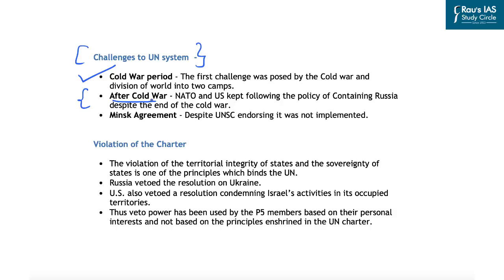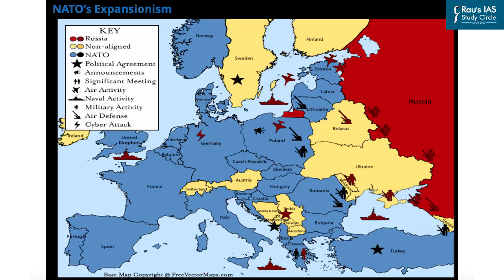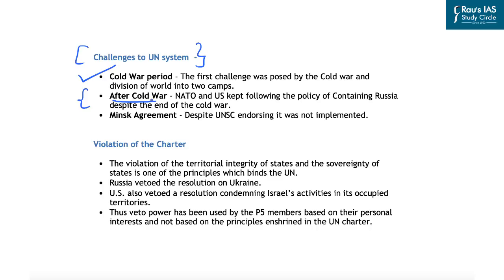When the Warsaw Pact ended, NATO did not. The NATO, led by the United States, kept expanding its membership, which was resented by Russia. NATO's expansionism is visible in the membership provided to erstwhile USSR republics such as Estonia, Latvia, and Lithuania. Ukraine was also being lured by NATO for membership, which Russia resented, leading to the current crisis in Ukraine.